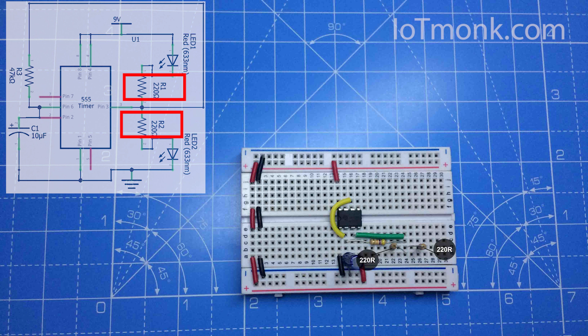Now take a 220 ohm resistor and place it such that one end of the 220 ohm resistor is connected to the 47k resistor and the other end is left open. Similarly do it for the second 220 ohm resistor. We will be connecting LEDs here.